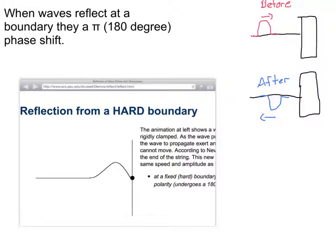This video is going to be all about standing waves. Before I talk about standing waves, I have to talk about what happens to a wave whenever it hits a boundary and is reflected back. That's a relatively simple explanation: whenever it does, it undergoes, upon reflection, a pi or 180-degree phase shift.